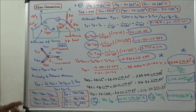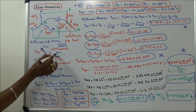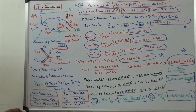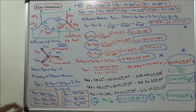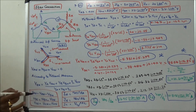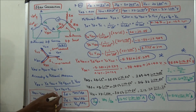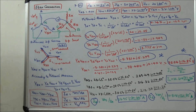Once VSN is known, we calculate: VAS equals VAN minus VSN, VBS equals VBN minus VSN, and VCS equals VCN minus VSN. Then the line currents are: IA equals VAS by ZA, IB equals VBS by ZB, and IC equals VCS by ZC.